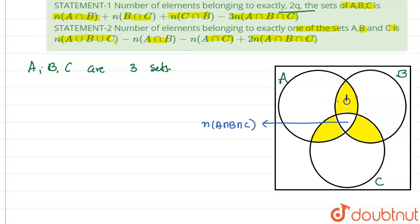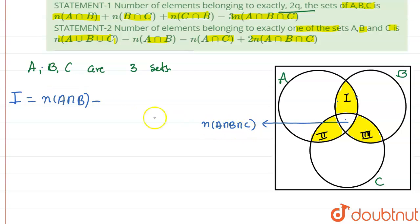We name the three regions as part 1, part 2, and part 3. We need to find part 1 + part 2 + part 3. Part 1 is N(A∩B) minus N(A∩B∩C) — that is, the full A∩B region subtracting the middle part.